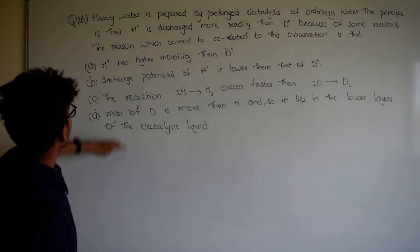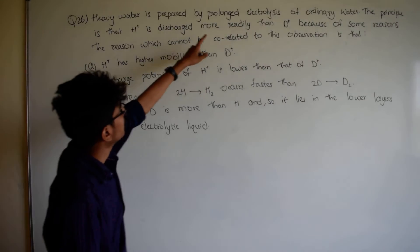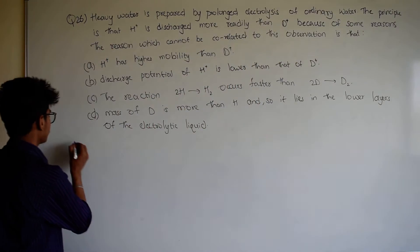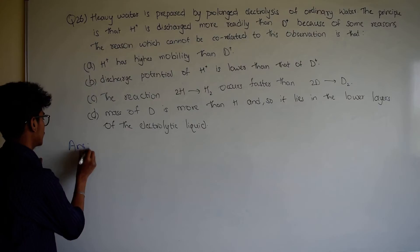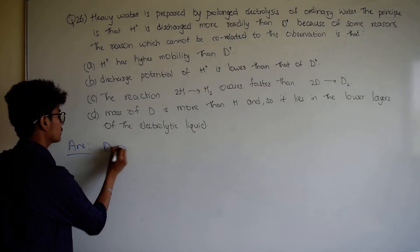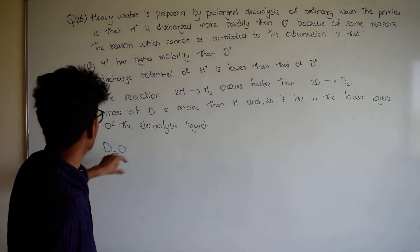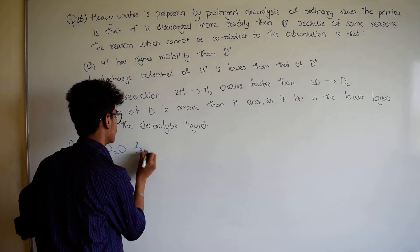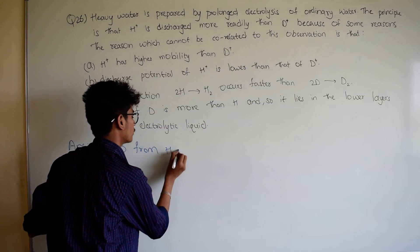I want to know that heavy water is created by prolonged electrolysis of ordinary water. Heavy water formula D2O. Heavy water from H2O, from ordinary water H2O.